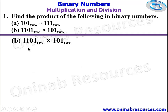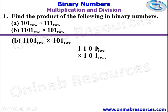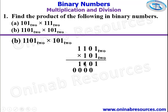We then go to part B. We have 1101 base 2 times 101 base 2. In the same way, we multiply: 1 times 1 gives 1, 1 times 0 gives 0, 1 times 1 gives 1, and 1 times 1 gives 1. We then start with this 0 as multiplier, which gives us 0, 0, 0.